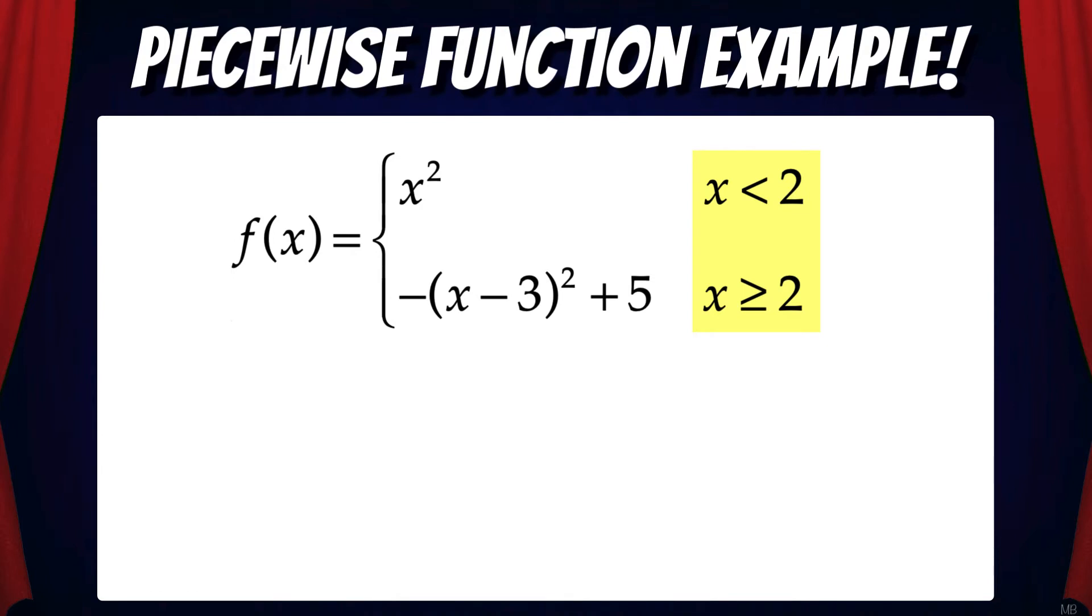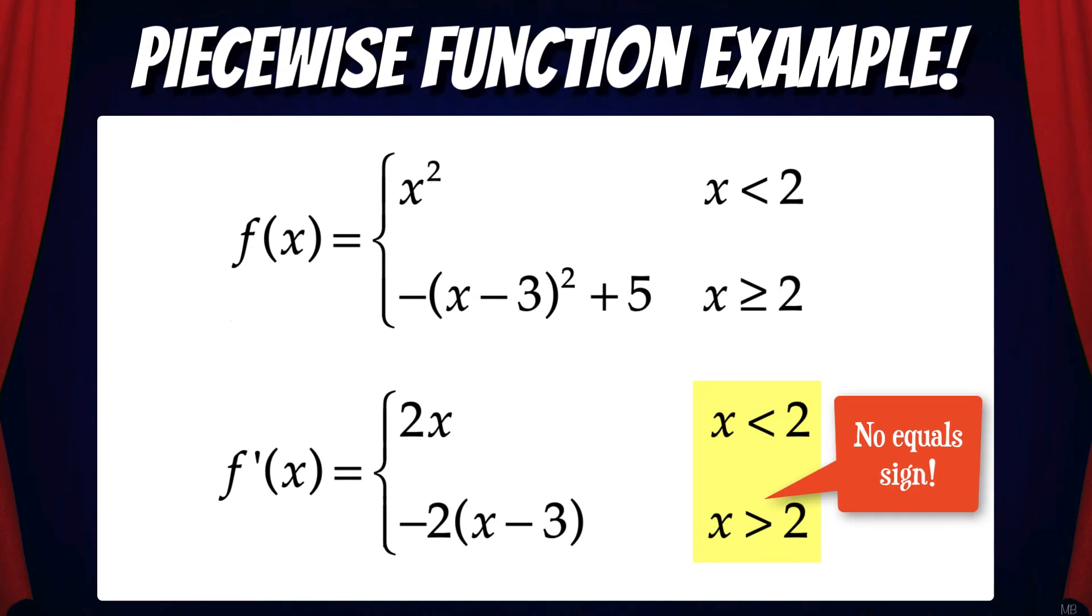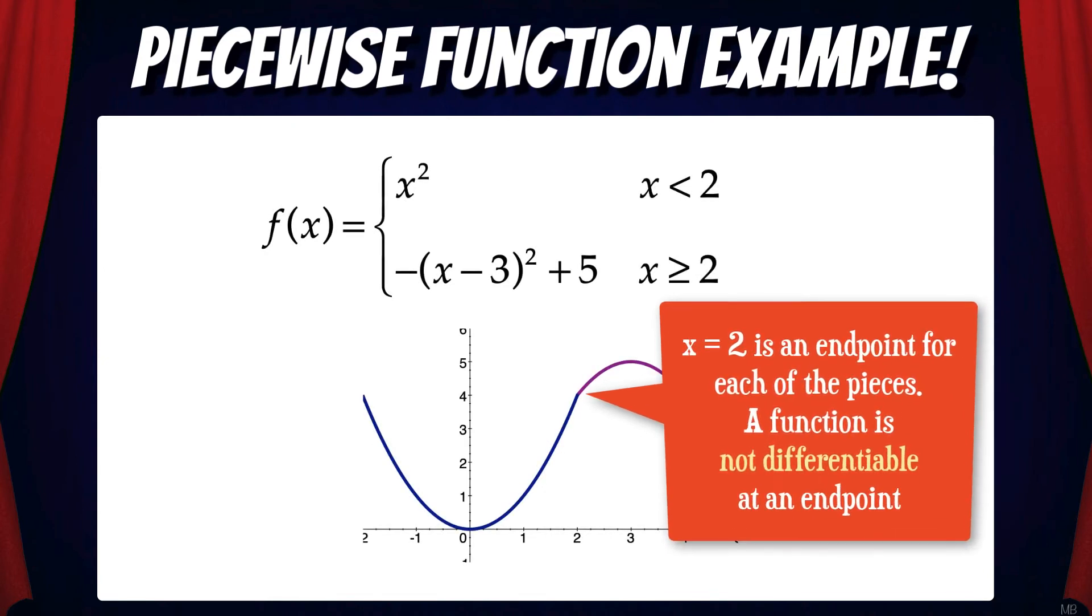When we take the derivative, the equal sign is dropped from the condition that had the equal sign. And this is because two is where the function breaks. That means it's an endpoint for each of the pieces. And we can't take the derivative at an endpoint. Remember, a function is not differentiable at an endpoint.